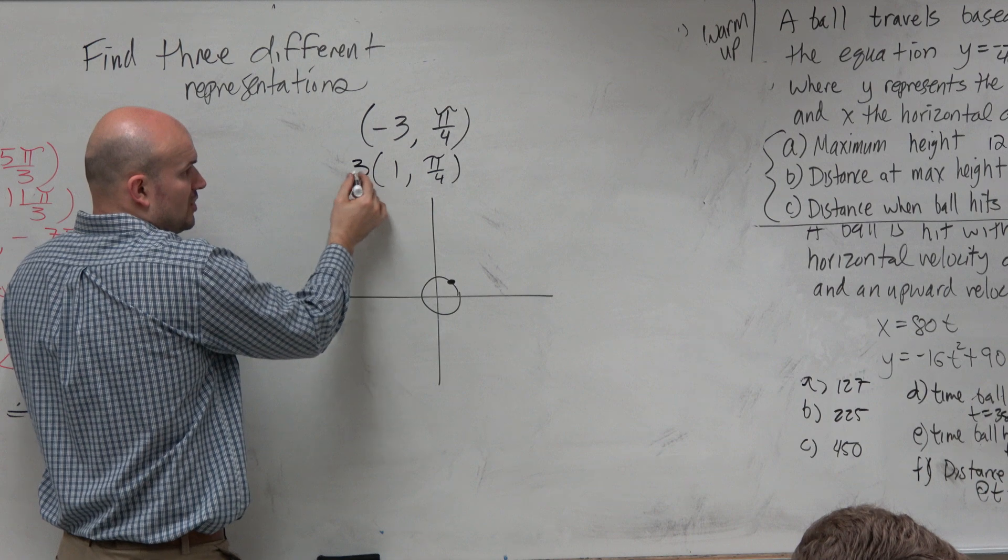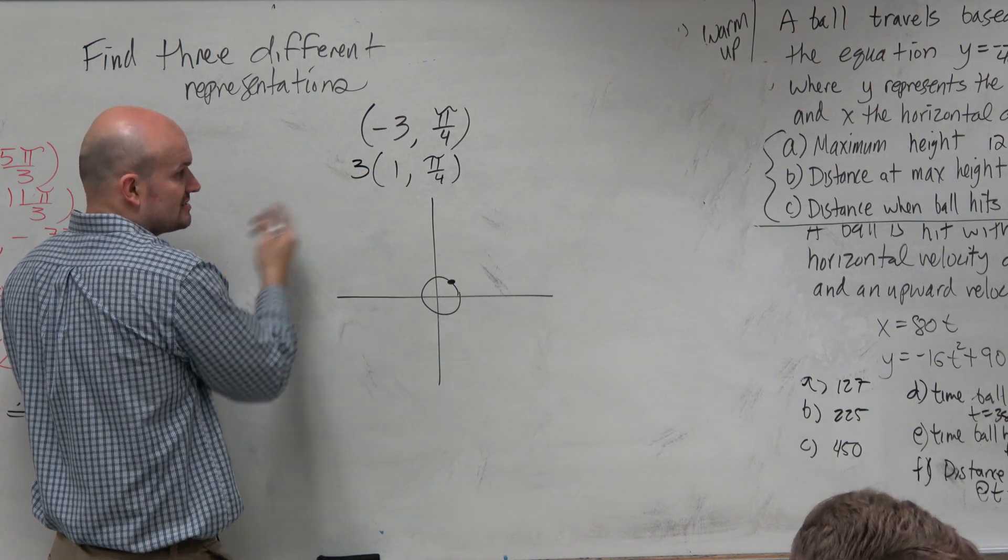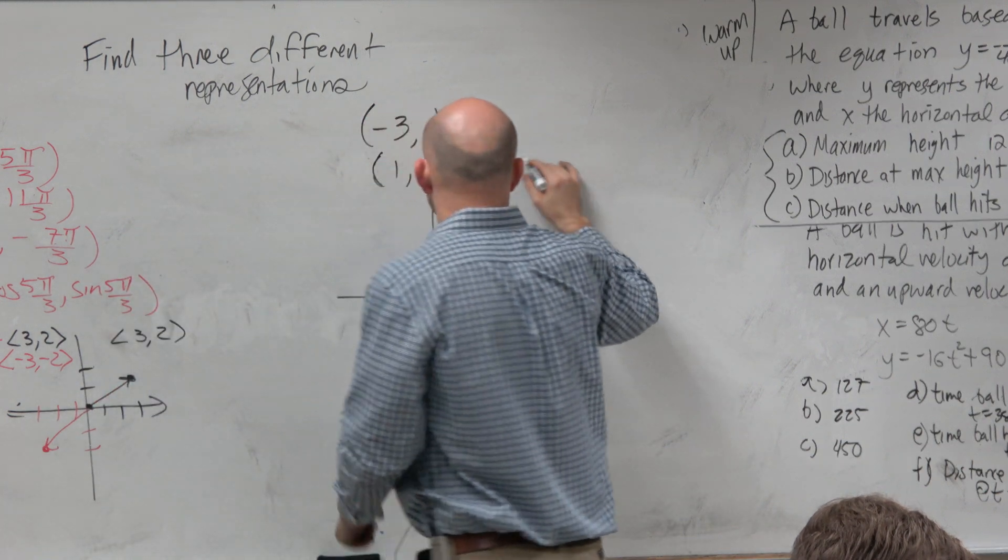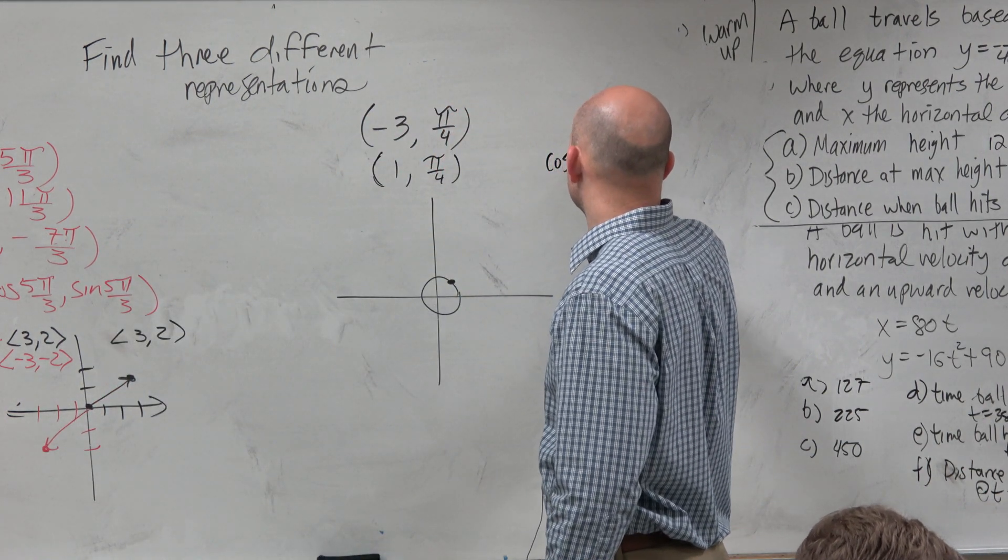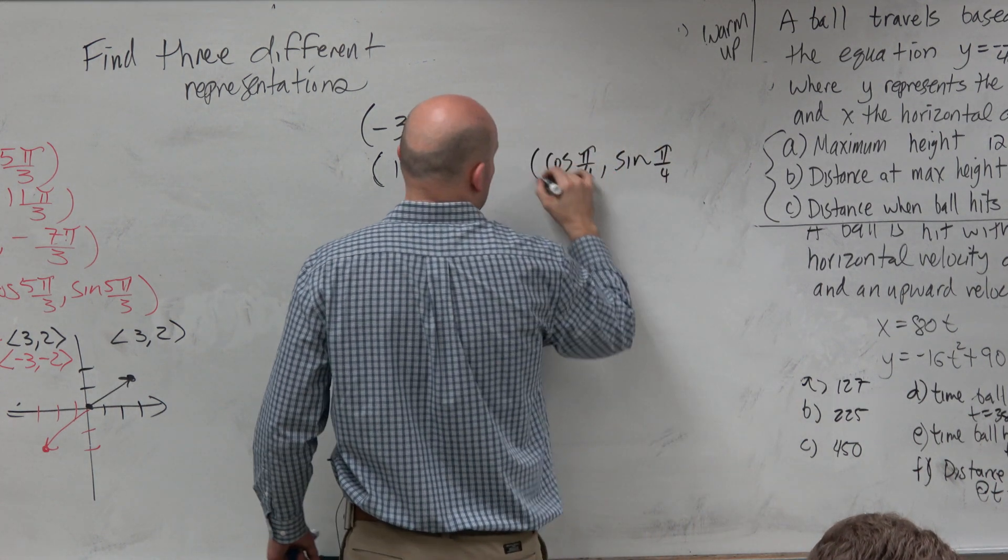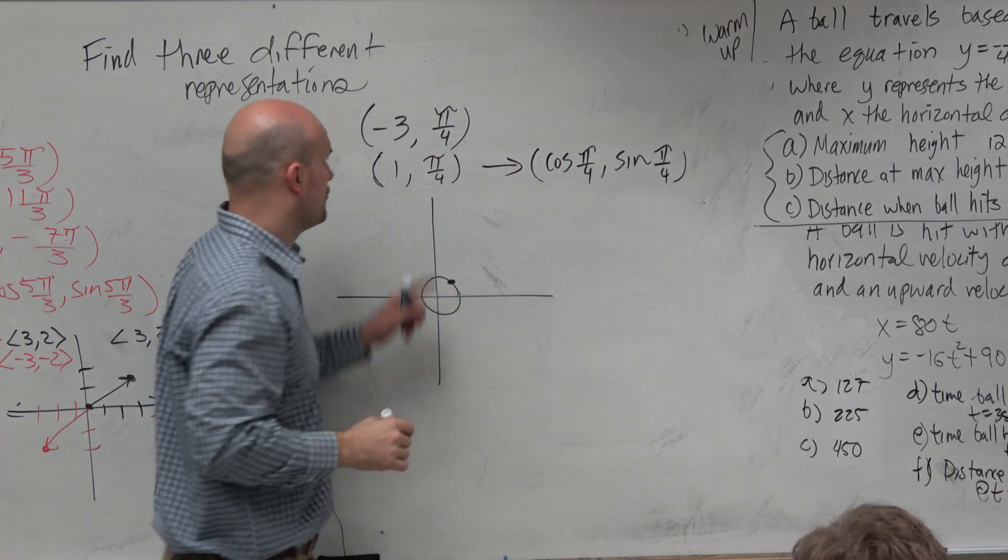So to get to the 3, we're really multiplying it by 3. We could write this as cosine of π/4, sine of π/4. That is the rectangular form of that.